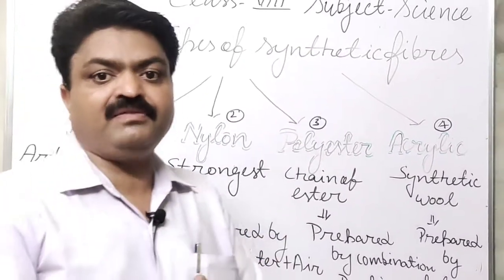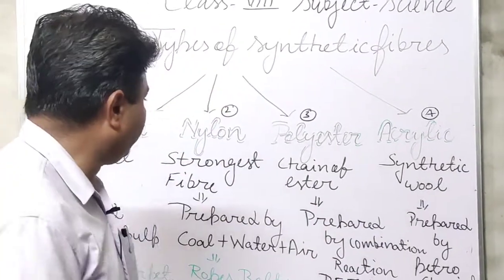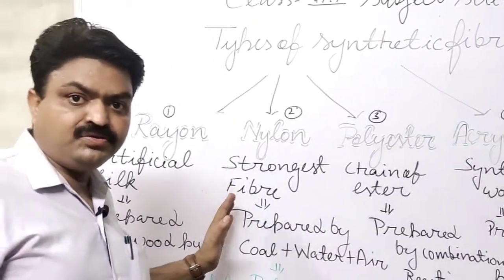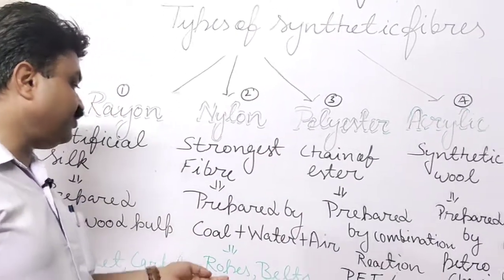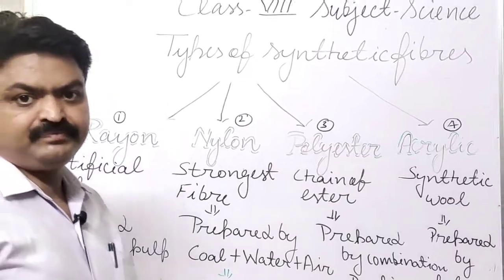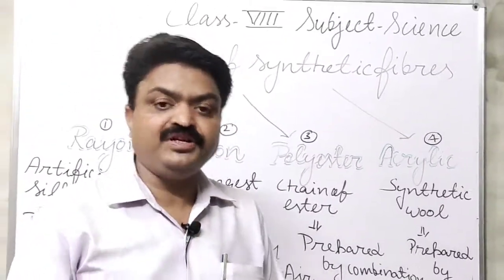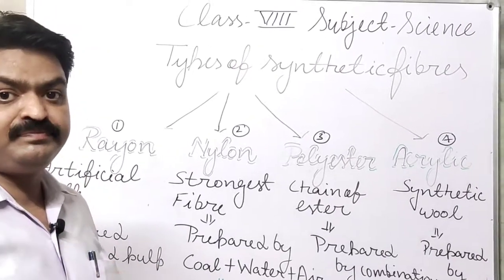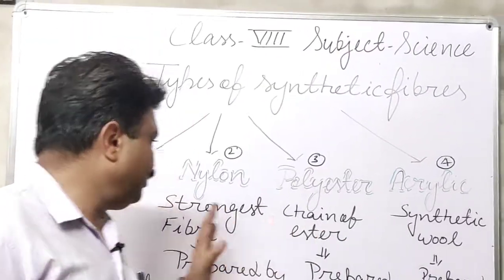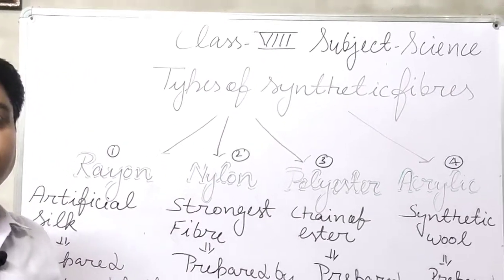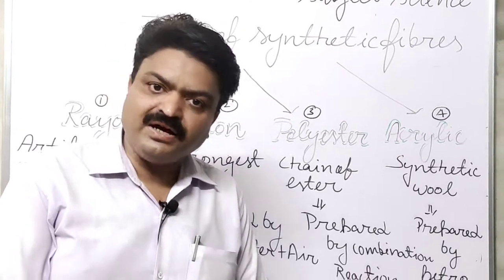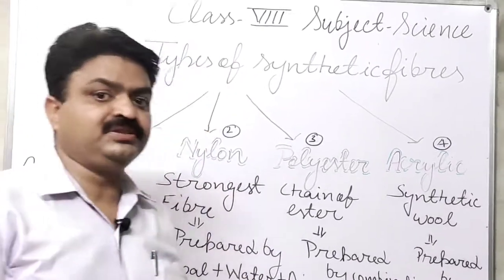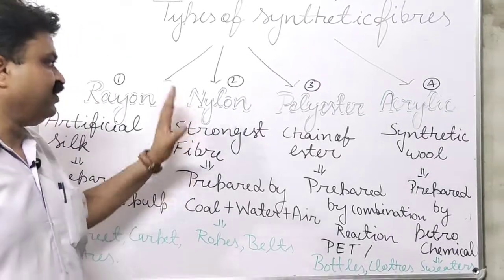Nylon is used in different materials, especially to make ropes and belts. The parachute ropes are made up of nylon fiber. Mountain climbing ropes are also made up of nylon. The seat belts of different automobile transports are also made up of nylon. So nylon is the strongest synthetic fiber, that's why ropes are made up of nylon.